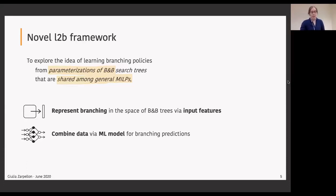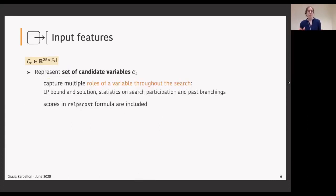Let's start to see how we define input features. At every branching step T, or at every node that needs to be branched in the tree, we represent the set of candidate variables at that node by an input matrix. In this matrix every candidate variable is represented by a vector of 25 scalars in which we capture the multiple roles that the variable can have throughout the search. We encode information about the LP bound and the solution of the variable, statistics on the solution, and also on the participation of the variable in the different search components and in past branchings. We also include the scores of the hybrid branching formula in SCIP.